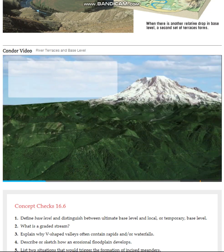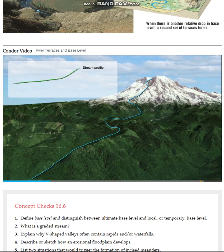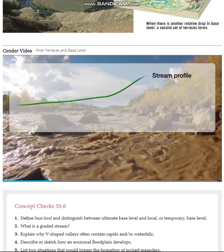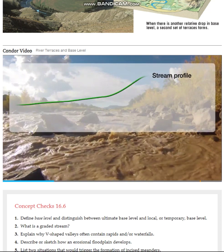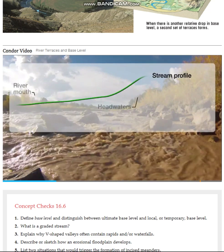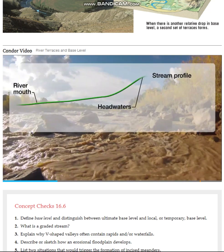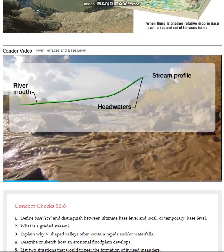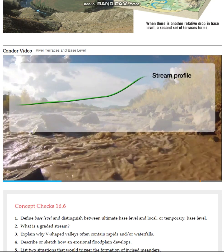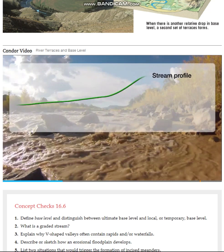So we've seen how lateral erosion widens the lowered floodplain, but what about the downward erosion that caused the change in the river's elevation in the first place? To understand that, let's look at this stream profile. A stream profile is a graphical representation of a cross section of a stream from the head to the mouth. Most stream profiles are steeper in the headwater region and have a more gentle gradient toward the mouth.